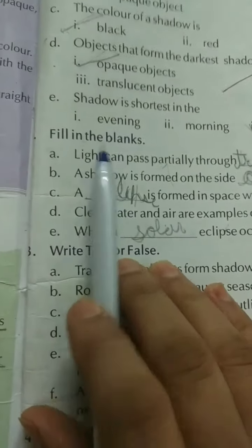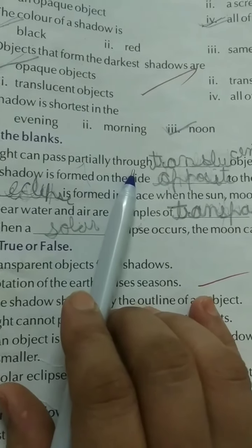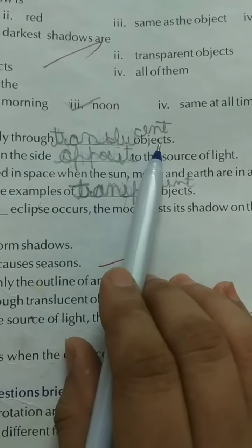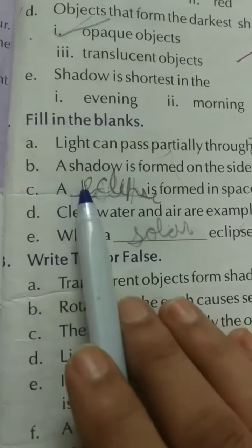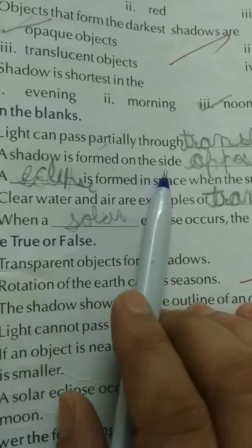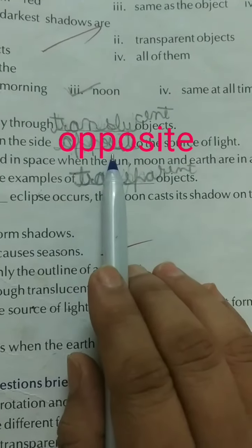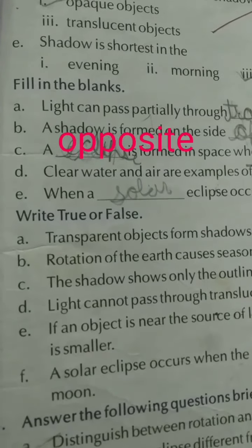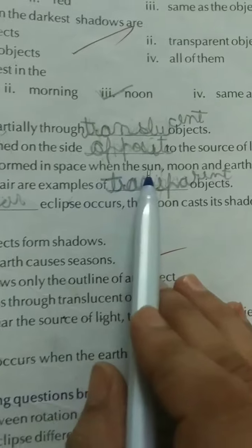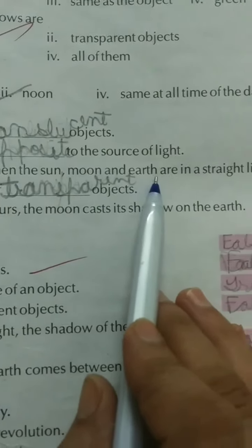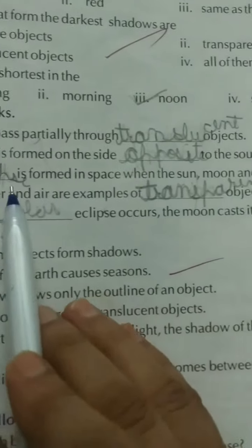Filling the blanks. Part A: Light can pass partially through translucent object. Part B: A shadow is formed on the side opposite to the source of light. Part C: An eclipse is formed in space when the sun, moon, and earth are in the straight line.